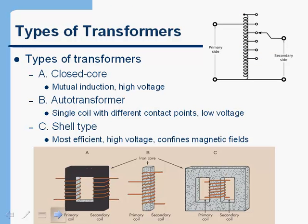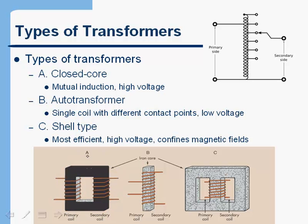There are three types of transformers to know about. The first is called a closed core, which is the example we've been using. All transformers work the same in terms of the equations. In a closed core transformer, two separate coils are surrounded by a square core of iron. Closed core transformers are good for high voltage and work by mutual induction — one coil creates the magnetic field, and that changing magnetic field creates a current in the second coil.